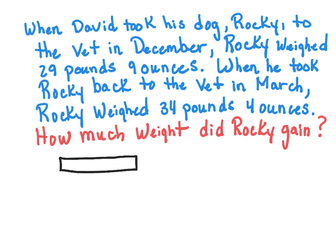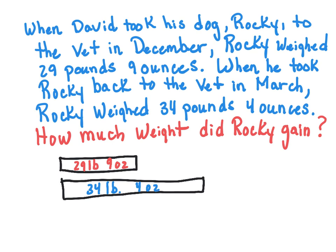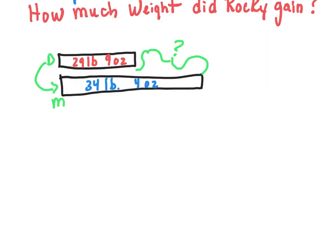And the first one is 29 pounds and 9 ounces. And then we have another one, which is going to represent when we took Rocky to the vet in March. And he weighed there 34 pounds and 4 ounces. So we need to know what happened here. We don't know how much weight he gained from December all the way to March. And just to find out this missing piece over here, we're going to have to subtract. So we have 34 pounds 4 ounces take away 29 pounds and 9 ounces.